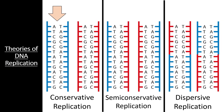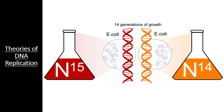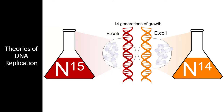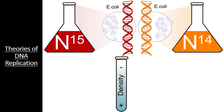In order to determine which of these theories was correct, a fantastic experiment was devised. E. coli bacteria use the elements in their environment to construct new nucleotides and build new DNA molecules. Thus, if you place these bacteria in a solution with normal nitrogen-14, the DNA will be slightly less dense than if you place the bacteria in a solution with the isotope nitrogen-15. You can literally measure the difference in their densities by centrifuging the two types of DNA at high speeds. The DNA with nitrogen-14 will appear higher in the centrifuge test tube than the DNA with nitrogen-15.